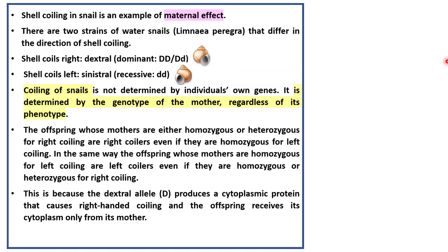Shell coiling in snails is an example of the maternal effect. There are two strains of water snails that differ in the direction of shell coiling. Shell coiling to the right is called dextral, and it is a dominant trait.